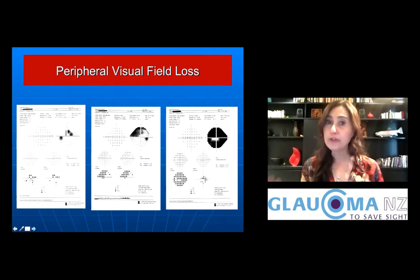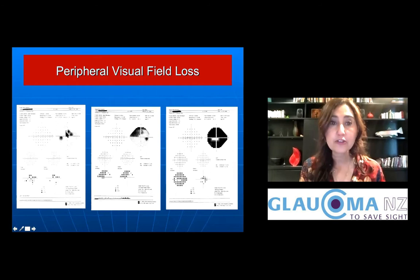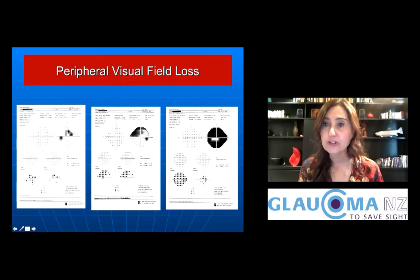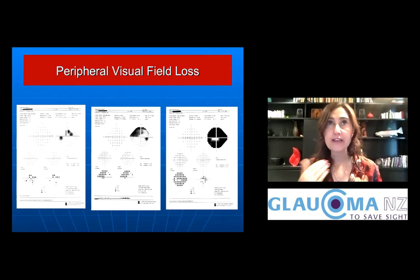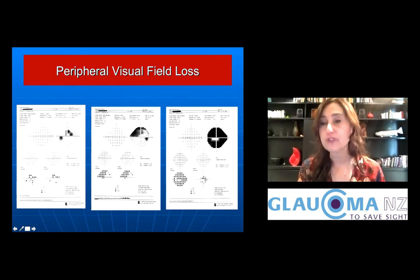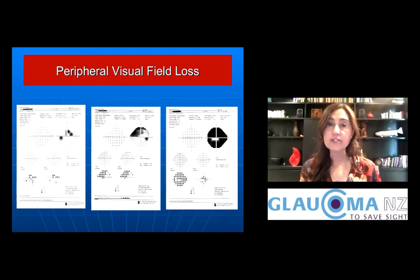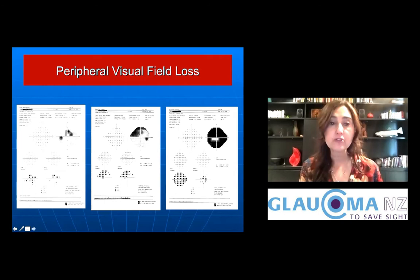This is a peripheral vision test that maps blind spots in your vision. On the left you see just a tiny blind spot at the top — the normal blind spot everyone has. With glaucoma progression, blind spots come in from the periphery until, on the right, only a tiny island of central vision remains. This person may still have 20/20 central vision, but they would be legally blind for driving because they lack sufficient peripheral vision — which is why glaucoma can be so devastating.